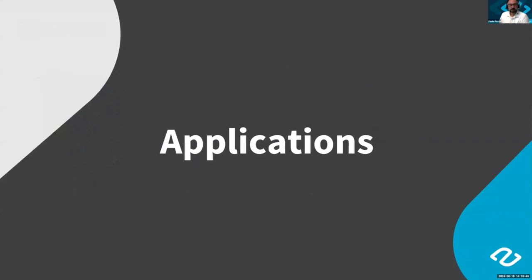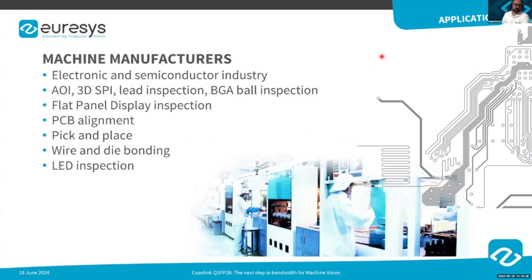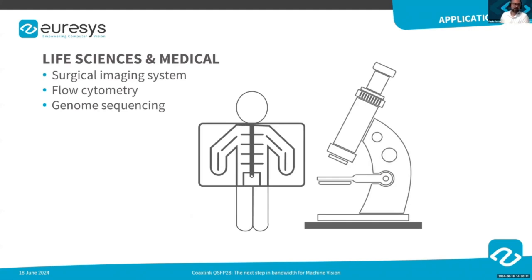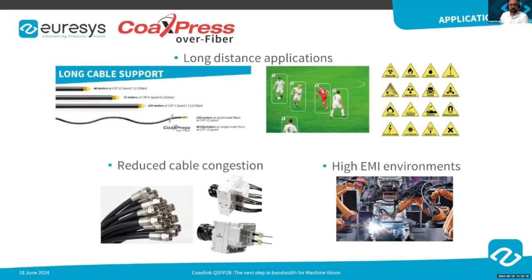In terms of applications, the QSFP28 board is designed and targeted at machine vision manufacturers in the electronic and semiconductor industry, as well as printing and packaging, food inspection, glass inspection, and medical industry and life sciences. Beyond regular machine vision applications, some applications were simply not possible without fiber — for example, long-distance applications where the host must be placed far from the camera. Fiber is also much lighter than copper and can drastically reduce cable congestion, and in high EMI environments, fiber is simply immune.